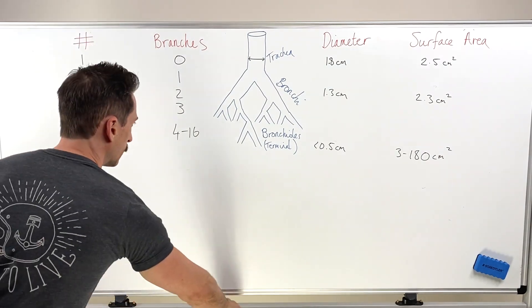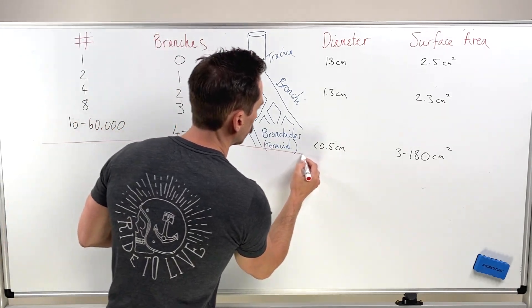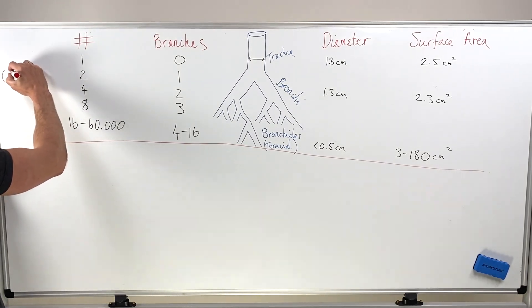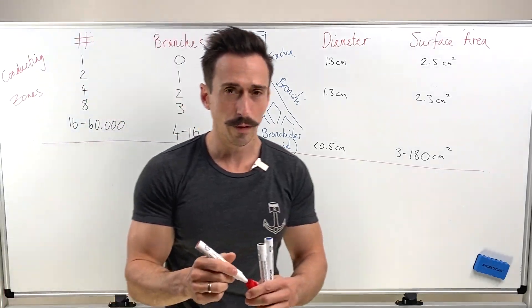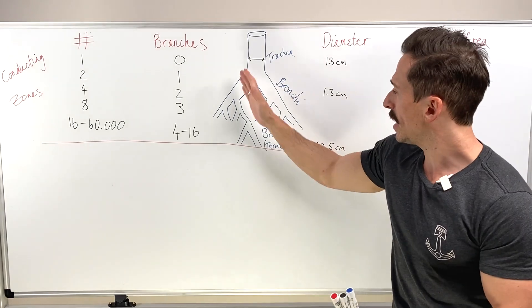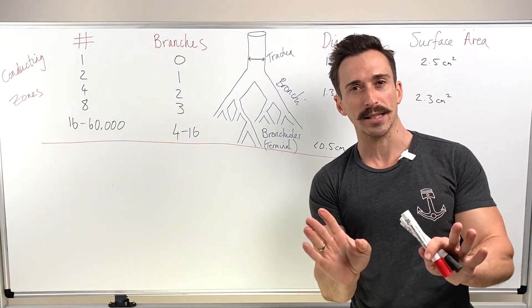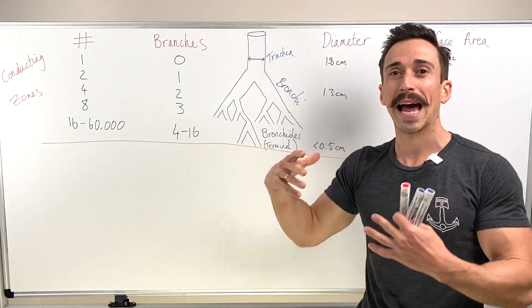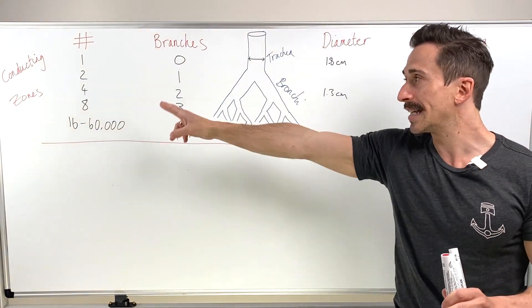Now an important point here is this. We've now hit an important point. What we've highlighted to you so far is simply something called the conducting zones. What the conducting zones are referring to is simply these are areas that just transmit air. They don't exchange gases. No oxygen and carbon dioxide is exchanged between these tubes and the body. It just transmits up and down this air, conducting zones.